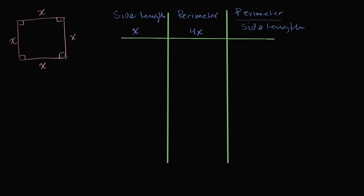When the side length is equal to one, the perimeter is four times one — one plus one plus one plus one — it's going to be four. The ratio is four to one, which is equal to four. Now, what if the side length is two? The perimeter is going to be two plus two plus two plus two, four times two, that's eight. So the ratio is eight to two, which equals four.